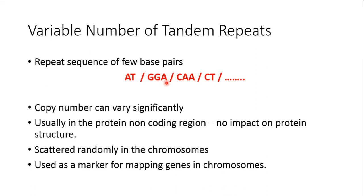The number of copies of such tandem repeats appears to vary from person to person. Because there is significant variation in them, the fragment size gets affected. But these tandem repeats are usually in the non-protein-coding regions, so the final protein that is formed does not get affected. Many times they may be in non-coding regions or in the introns. These tandem repeats are scattered randomly in the chromosomes and are generally used as markers for mapping genes.